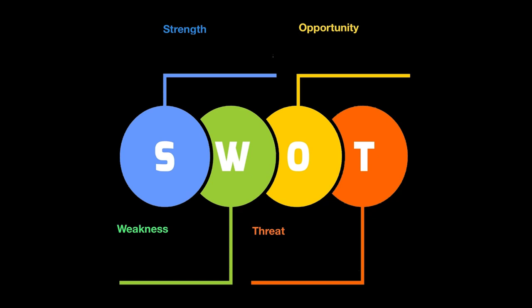The SWOT analysis looks at both the internal factors of a business and the external factors. Two of these are internal to a business, and two of these are external. For example, if I asked you in an interview what are your strengths, you're going to look inside and tell me you're confident, compassionate, diligent — you look within yourself for strengths. Weakness is the same: you look at what you're lacking within you. So strengths and weaknesses are both internal to a business.